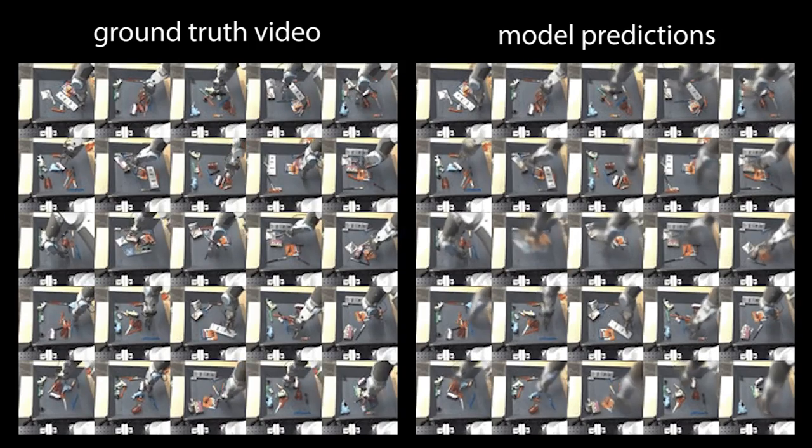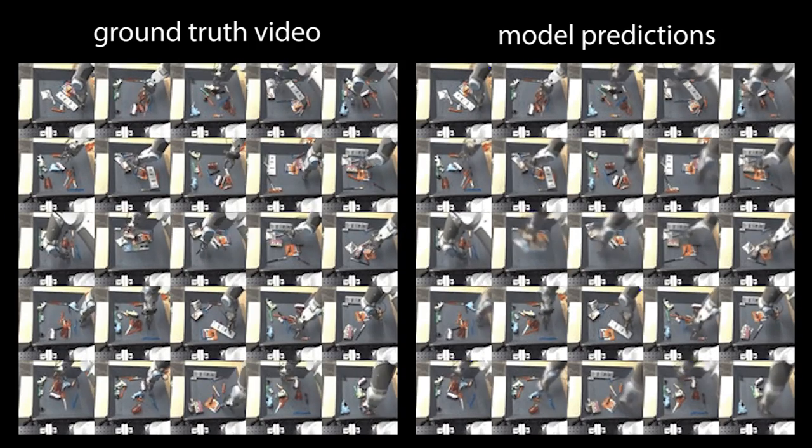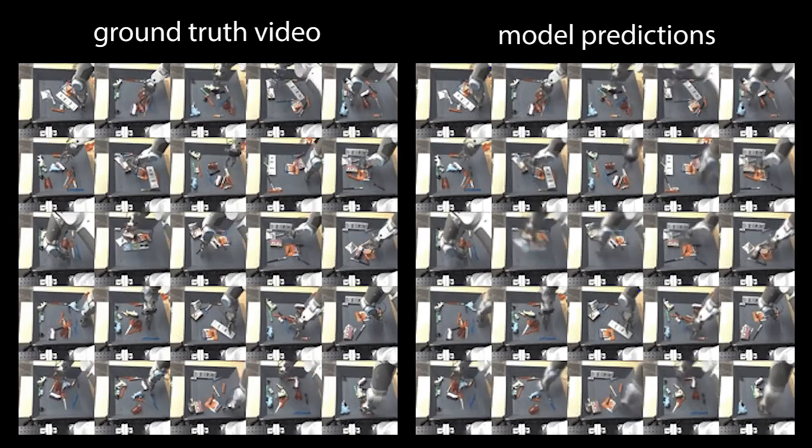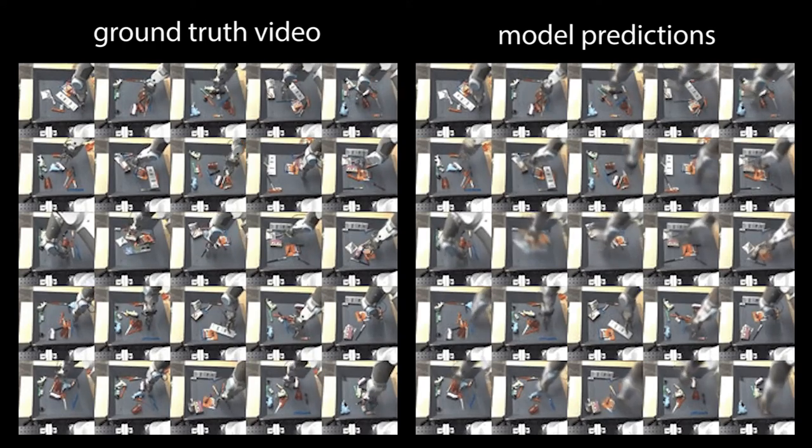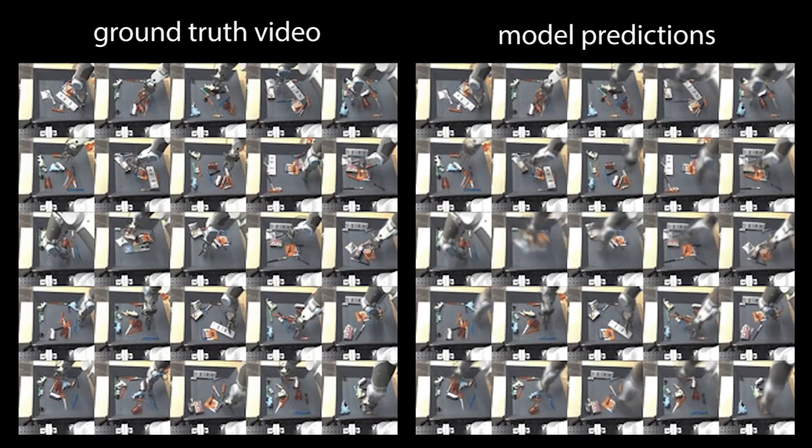In this video we show qualitative predictions. Here are randomly sampled ground truth videos and predicted videos produced by our model. Our model learns to make reasonable, though blurry, predictions of both the arm motion and the object motion.